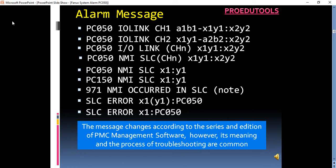When IO-Link communication fails, system alarm is issued with one of the following messages. The message changes according to the series and edition of PMC management software, however, its meaning and the process of troubleshooting are common.